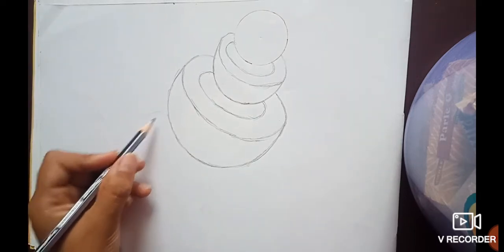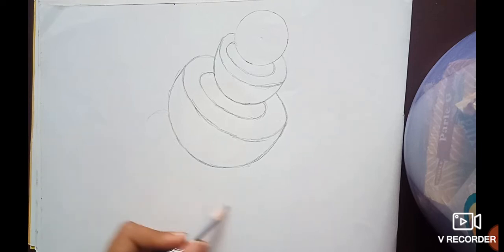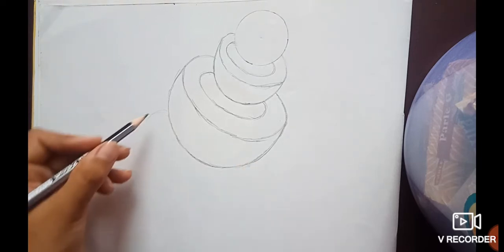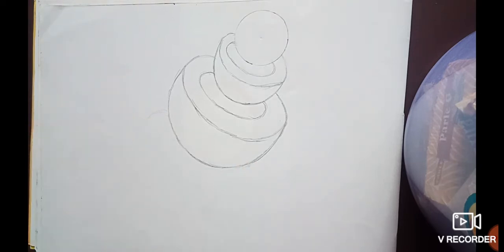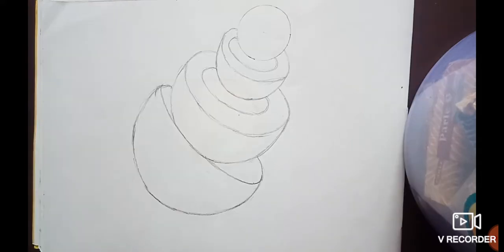Now, what you have to do is draw a bigger type of circle or semi-circle or bowl, because that is going to be our last layer.